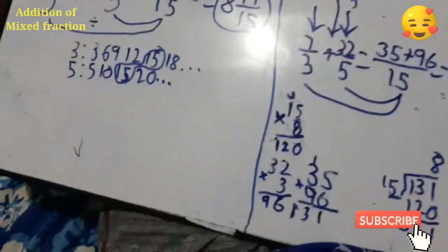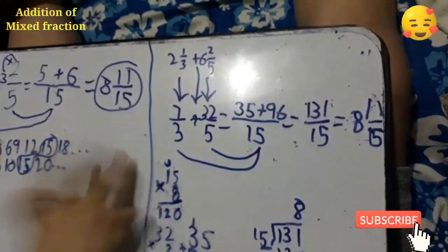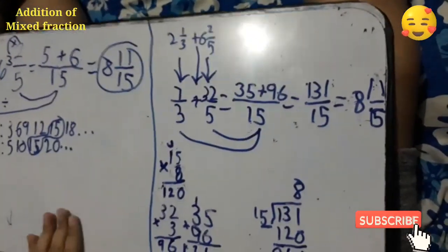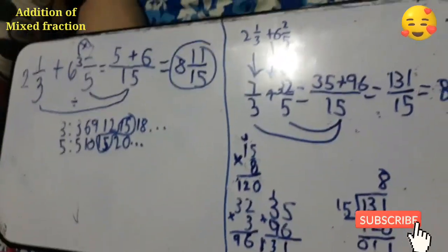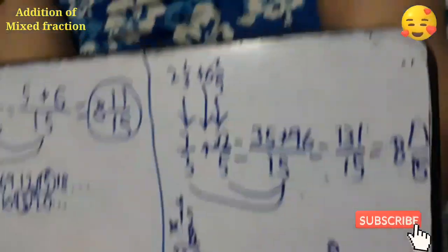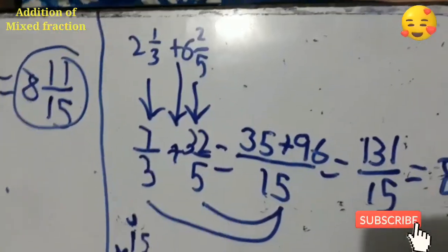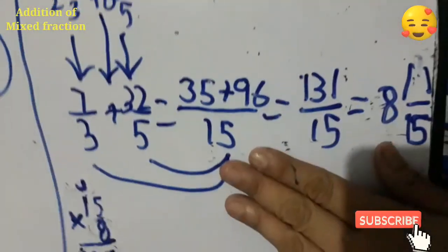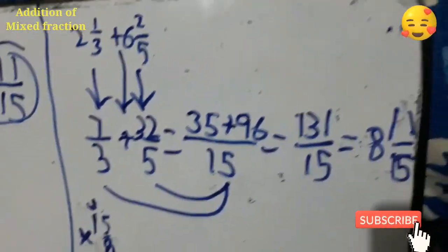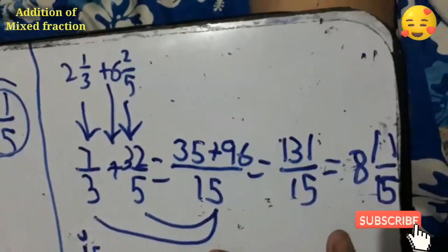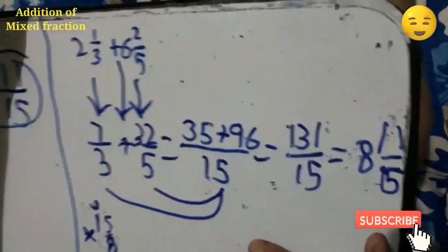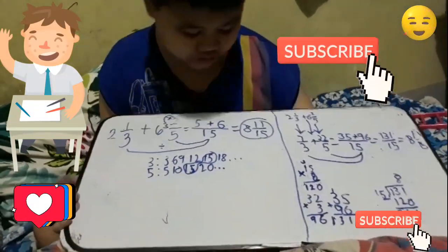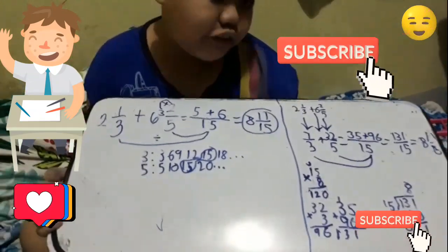Which is easier? The left or the right? We got the same answer. Which is easier? The left. Because this one has a twist. The mixed fraction must turn into improper fraction. Don't be confused when you use this one. This is for checking. This is now my final answer. The final answer is 8 and 11 over 15.